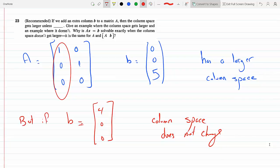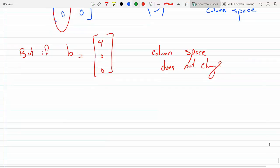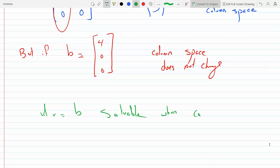In other words, B has to be in the column space of A, and so Ax = b is solvable when the column space does not get larger.